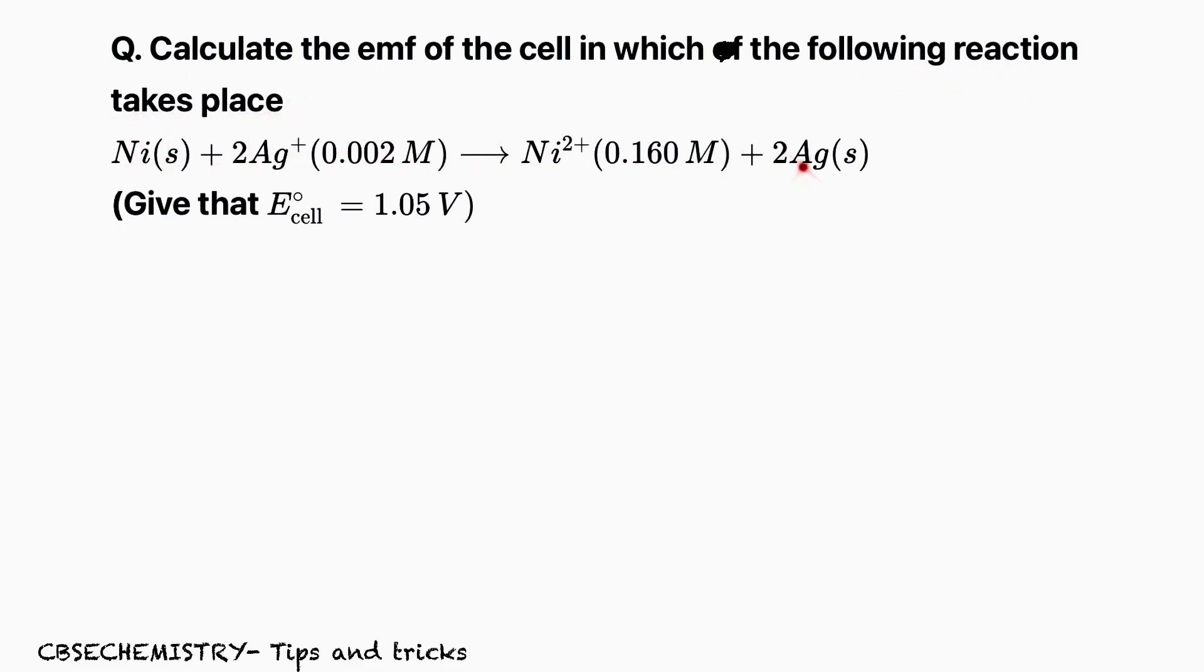You can see the reaction here. Also, they have given that E°cell value is equal to 1.05 volt. If the question is to find EMF of the cell, then no doubt you have to use Nernst equation. What is Nernst equation? E_cell is equal to E°cell minus 0.0591 by N log concentration of the product by concentration of the reactant.